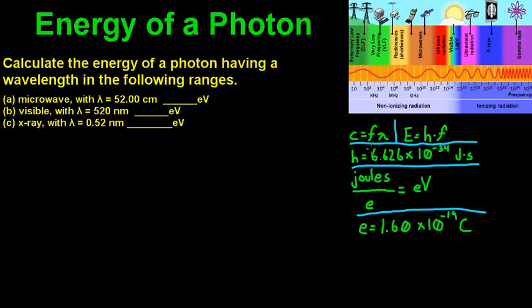That's going to leave us with an answer in joules, and we need it in electron volts. So we divide the answer by the charge of an electron, which is 1.6 times 10 to the negative 19th coulombs, and that's going to leave us with electron volts.